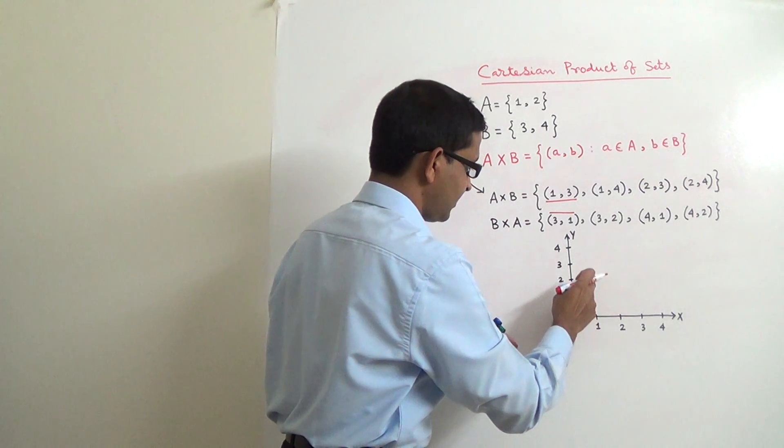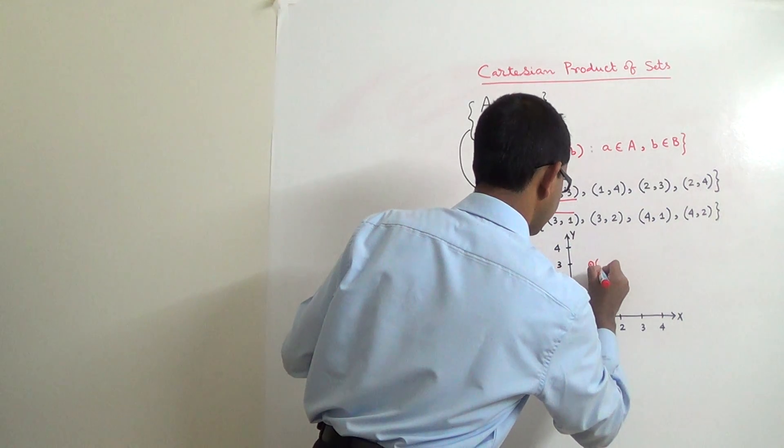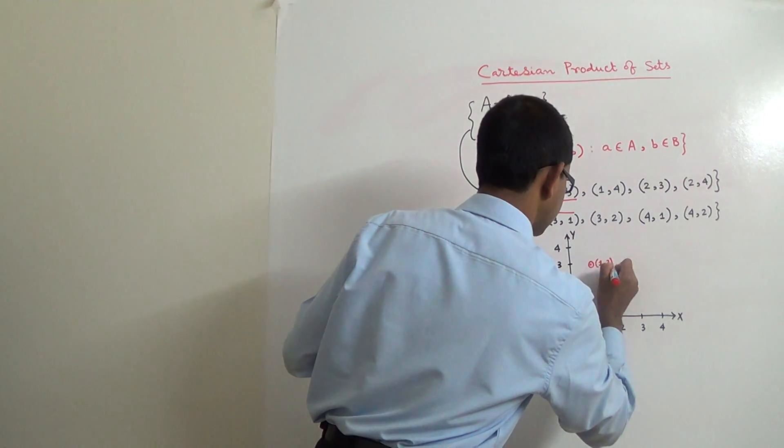Along x-axis I will go 1 unit. And then, along y-axis I will go 3 units. That means, the point will be somewhere here. That is the point (1,3).